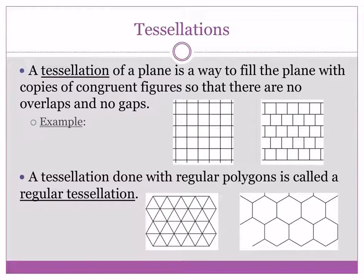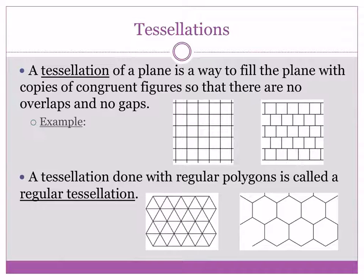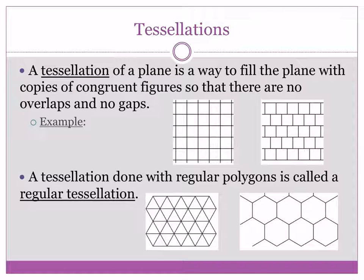A tessellation done with regular polygons is called a regular tessellation. The shapes you had on the floor included regular shapes like an equilateral triangle, a regular hexagon, and squares. If you used just hexagons, or just squares — which is the picture right here — that would be a regular tessellation.